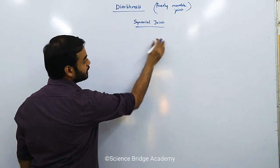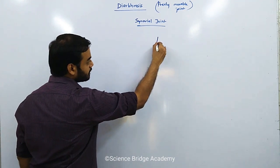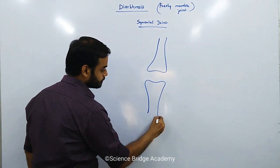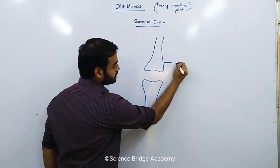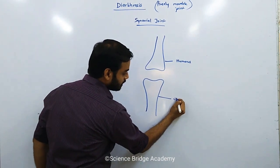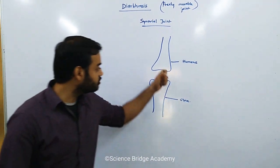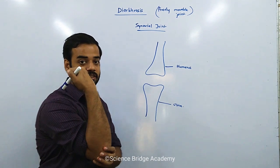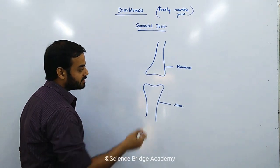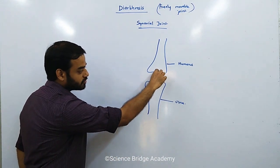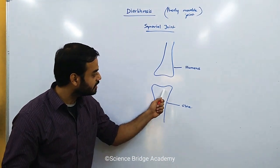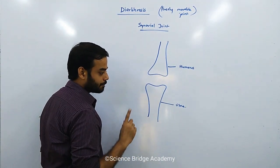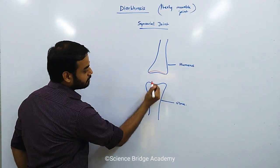Let us take the example of the elbow joint. The two bones involved are the humerus — the bone of the upper arm — and the ulna in the forearm. These two bones form the elbow joint, allowing flexion and extension. There is a space between the bones; they are not directly connected. Without any protective structure, there would be friction and the bones would get eroded.